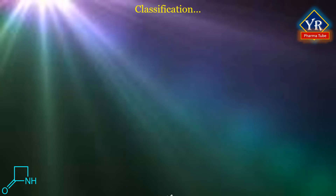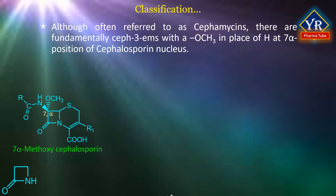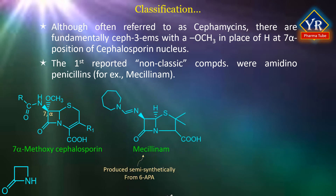The discovery of the 7-alpha methoxycephalosporins in 1971 provided the first new naturally occurring beta-lactam nucleus since the isolation of cephalosporin C. Although often referred to as cephamycins, these are fundamentally cef-3-ems with a methoxy group in place of hydrogen at the 7-alpha position of the cephalosporin nucleus. The first reported non-classic beta-lactam containing compounds were the amidinopenicillins, e.g. mecillinam, produced semisynthetically from 6-aminopenicillanic acid, abbreviated 6-APA.